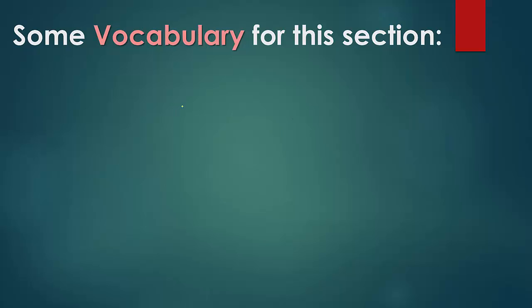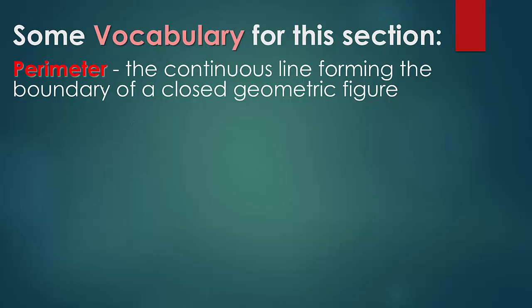But let's start off with some vocabulary for this section. Okay, so perimeter, in case you're not aware, it's the continuous line forming the boundary of a closed geometric figure. So like, let's say I had a triangle, it would be the measure of the three sides. So starting here would be the measure of this side, this side, and then that side.